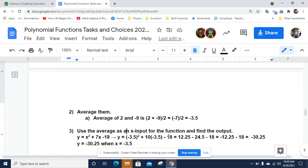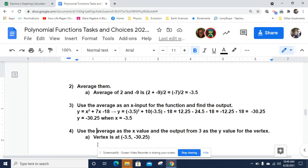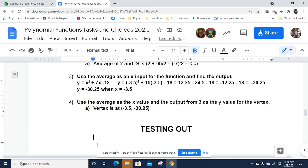We subtract 18, we get negative 30.25. So y would be negative 30.25 when x is negative 3.5. And there is our vertex at negative 3.5, negative 30.25. And I will now put in the testing out links. I hope that was helpful.